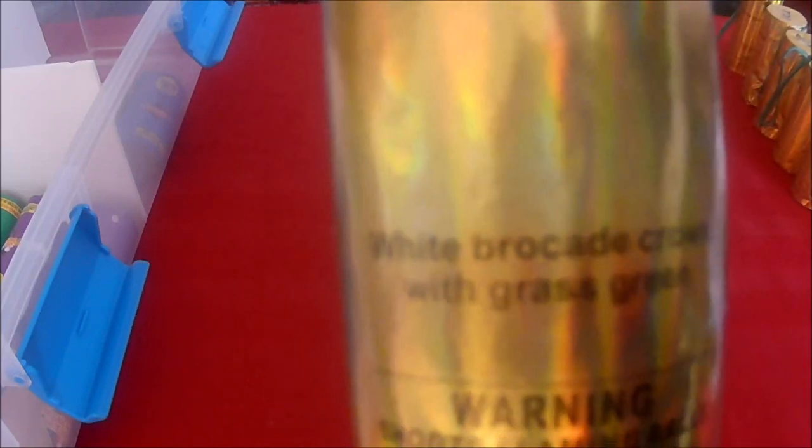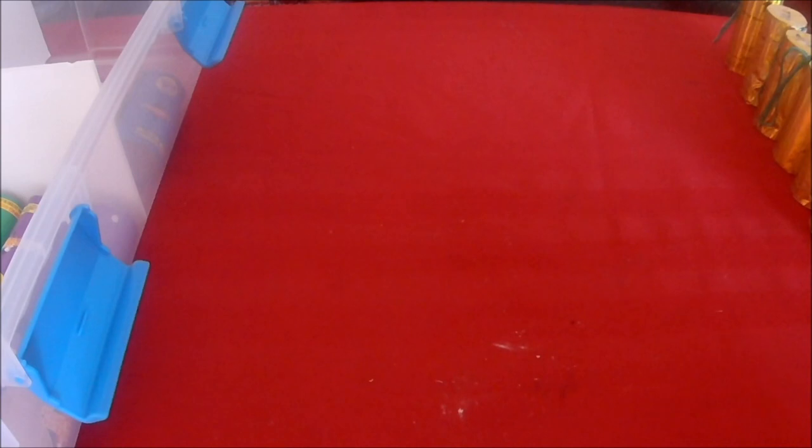Next one we've got white brocade crown with grass green. Grass green again. This one's probably going to go in the brocade category. All will be a little bit different, which is why we're sorting them. I bumped my camera. This one weighs in about 141 grams. Now we've got all six of these King of the Canister shells.